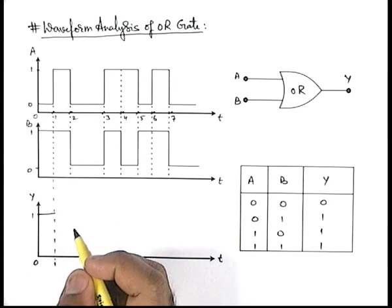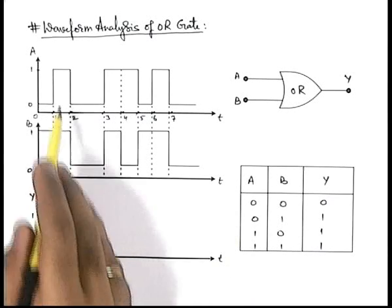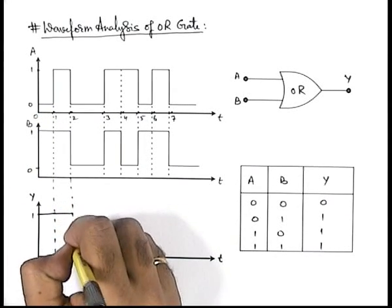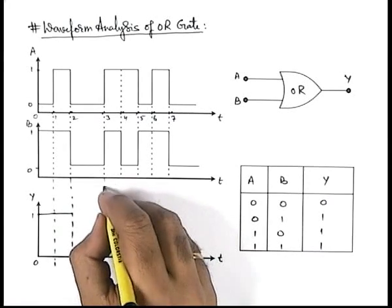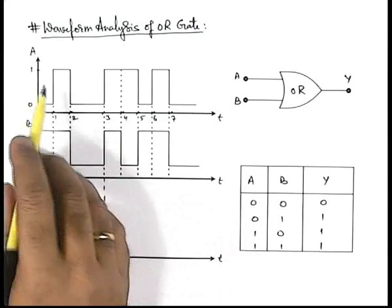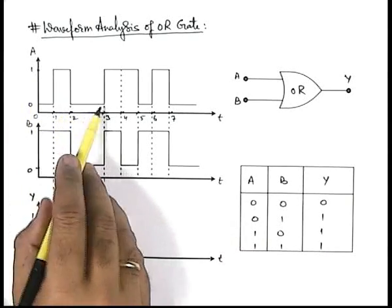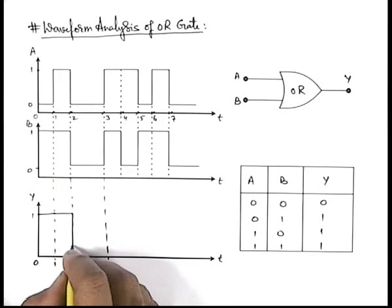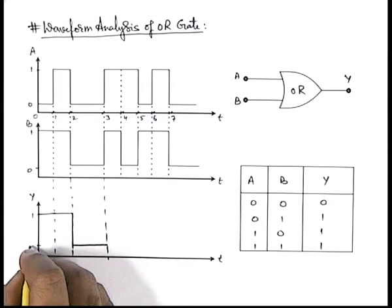Now again if we further see from one to two both are at one state so it will be carried over to two. And from this instant two to three, here you can see signal at A is in zero state and at B is also in zero state, so this will drop to the zero state.